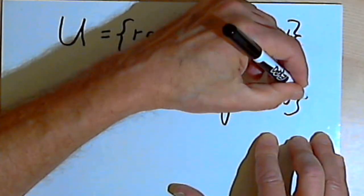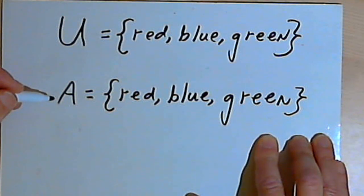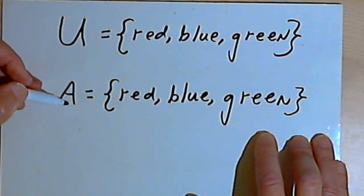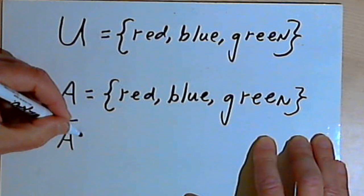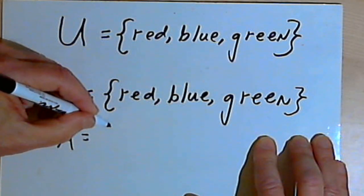So A is not a proper subset of the universe, but it is a subset. If I make the complement of A, then that's going to be an empty set.